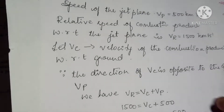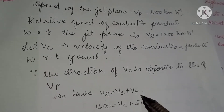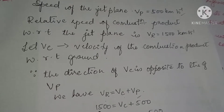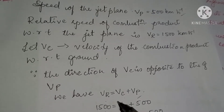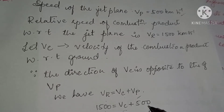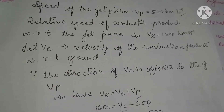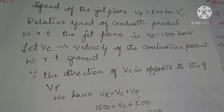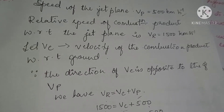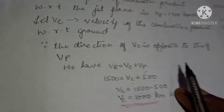Therefore, the relative velocity Vr equals Vc plus Vp, where Vc is the velocity of the combustion gases and Vp is the velocity of the jet plane. So: 1500 = Vc + 500, which gives Vc = 1500 − 500 = 1000 km per hour.